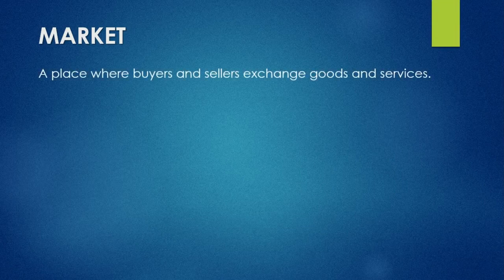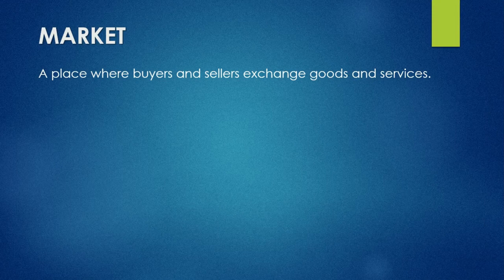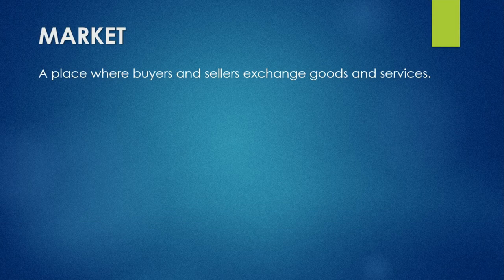It is important that we understand exactly what a market is. A market is a place where buyers and sellers can come together to exchange goods and services. A market does not necessarily mean a physical market — it can also be a virtual one. A physical market is when we go to the shop and exchange money for a good. A virtual market can be a stock market, such as the Johannesburg Stock Exchange, or the JSE, where people buy and sell shares in companies.